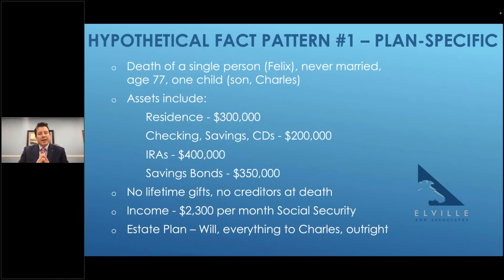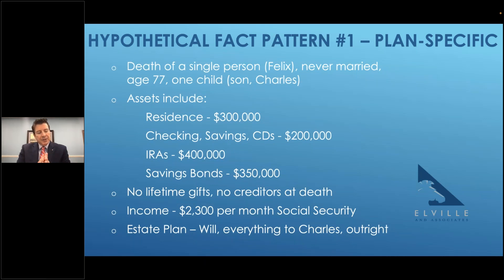In example number one, we have a single person — we'll call him Felix. This hypothetical person was never married. He has one son, Charles, who is now going to be the personal representative. If we go to the bottom of this bullet point list, we see there is a will, and that will leaves everything to Charles. When we see a will involved, we know that by its very nature this is going to be subject to probate.